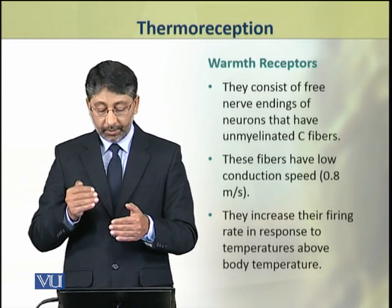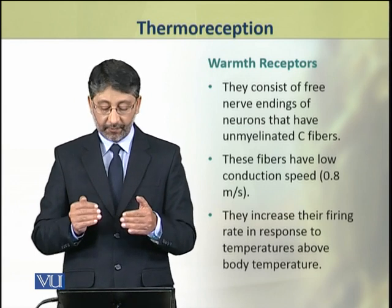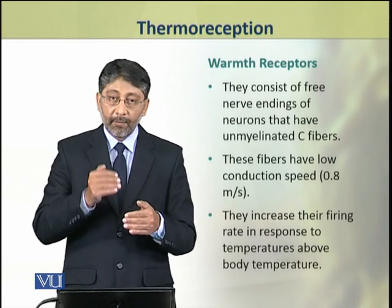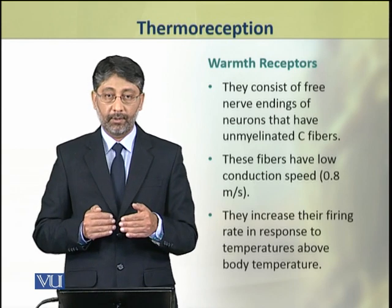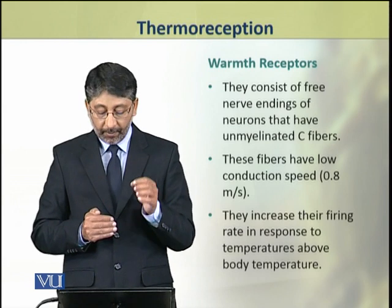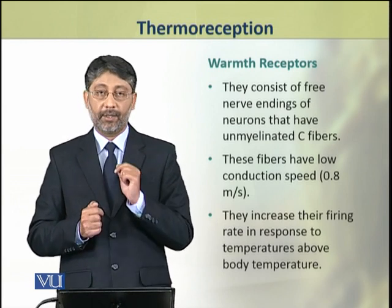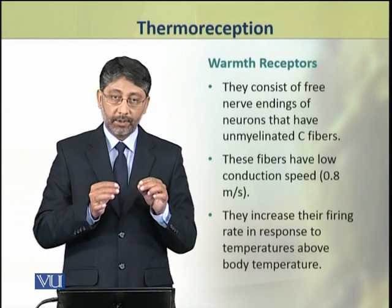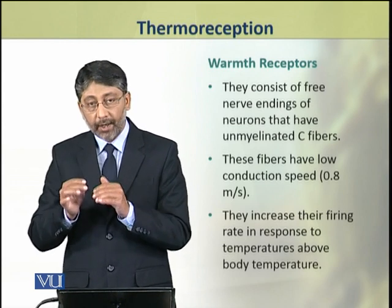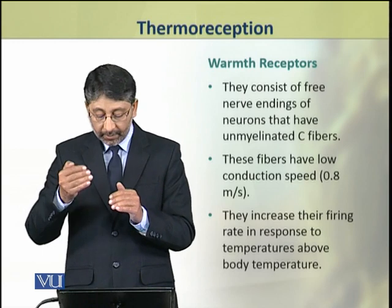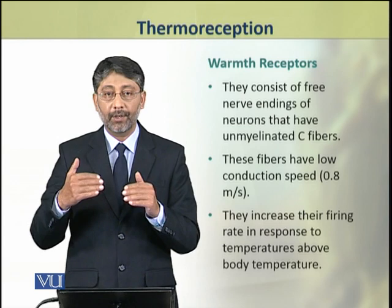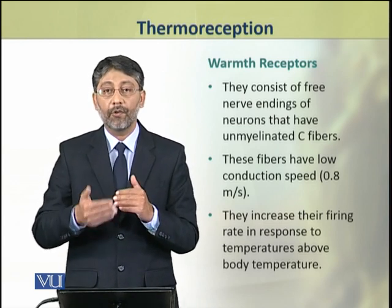The warmth receptors also consist of free nerve endings, but their neurons have unmyelinated C fibers. These fibers have a low conduction speed of about 0.8 meters per second. These receptors increase their firing rate when the external temperature rises above body temperature.